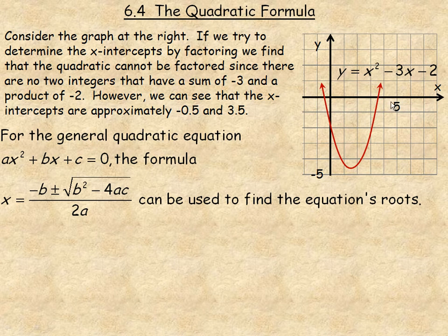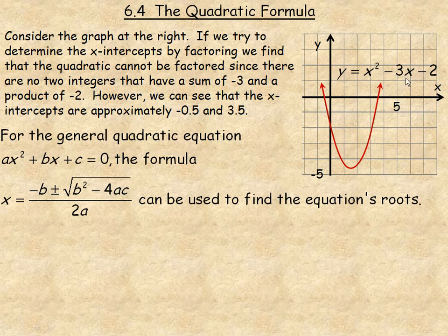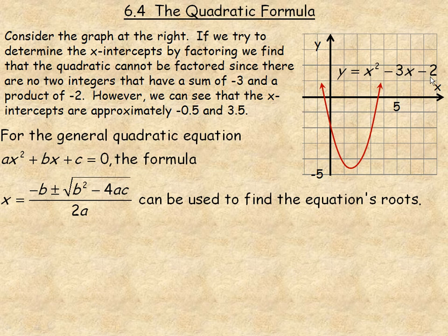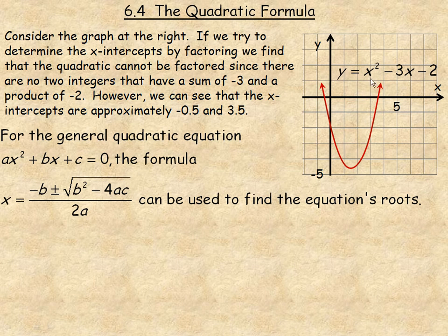We would find those by factoring the quadratic x squared minus 3x minus 2, but this won't factor. In order to factor, we need to find two integers that add to negative 3 and that multiply to negative 2, and those numbers don't exist. But the fact that it can't be factored doesn't mean there aren't intercepts — it just means we have to find another way to find them.